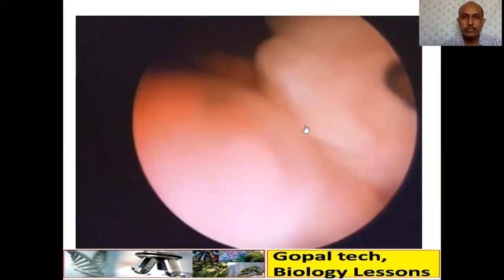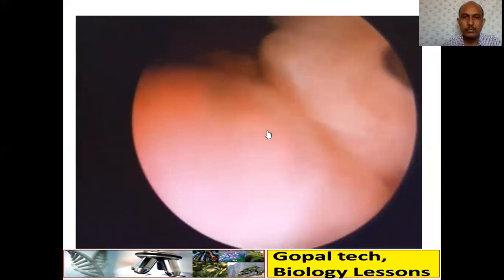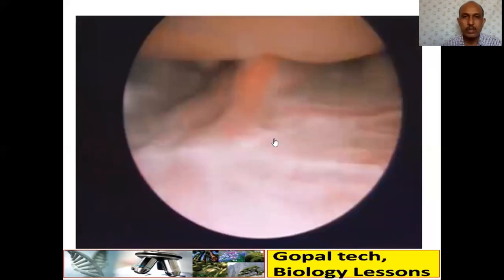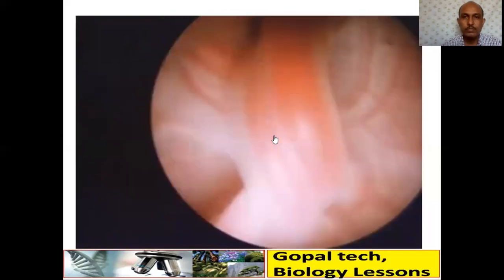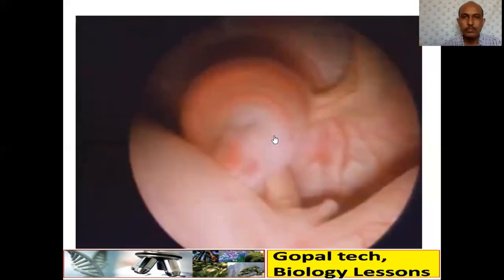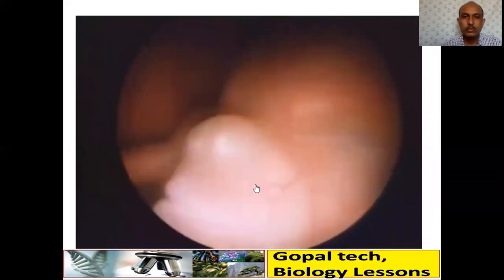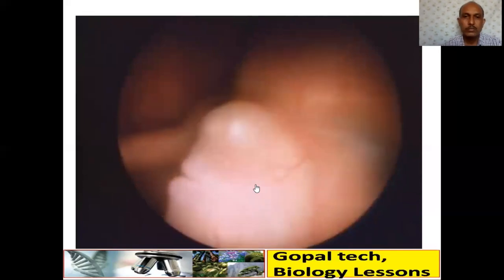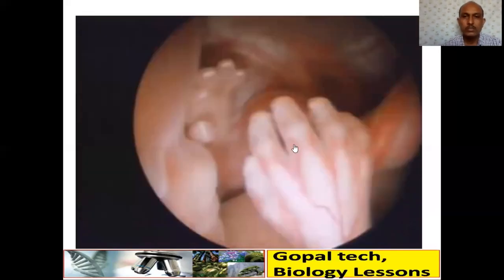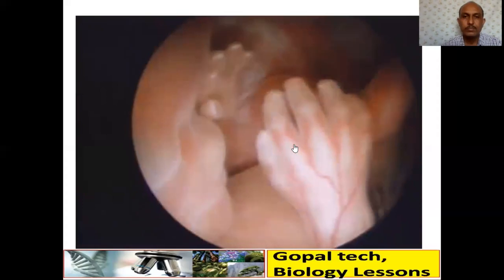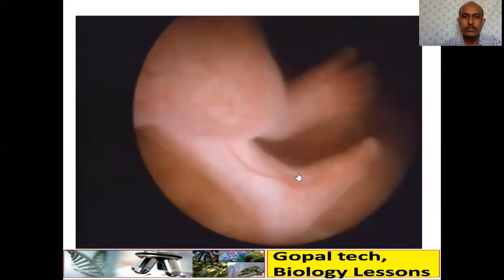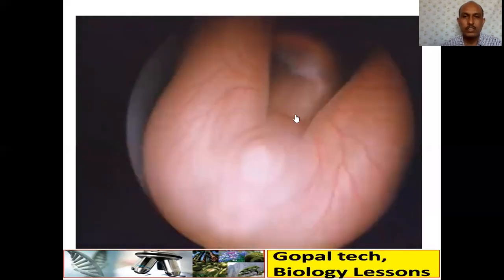The umbilical cord emerges from the placenta and joins the embryo at the abdomen, at a place that will eventually become the navel. At eight weeks, the nostrils have not yet opened but the embryo exchanges amniotic fluid through the open mouth. The bones and blood vessels of the hands can be clearly seen; in the developing leg are the Achilles tendon and calf muscle. At this stage the external sex organs look the same in both sexes.